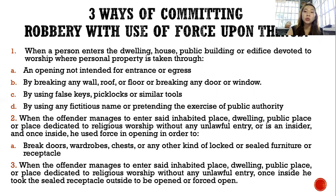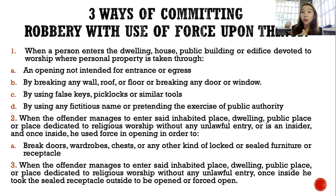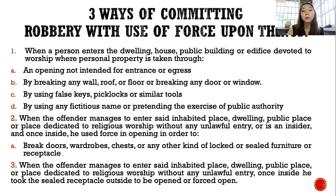The second act is when the offender is already inside or is an insider, and he opens wardrobes — usually where cash, jewelry, or other valuables are kept. The third act is when the offender manages to enter the inhabited place, dwelling, public place, or place dedicated to religious worship without any unlawful entry. Once inside, he takes the sealed receptacle outside to be opened or forced open — for example, taking out the whole cabinet or jewelry box.